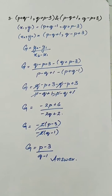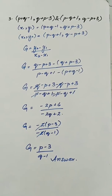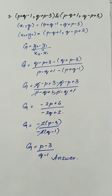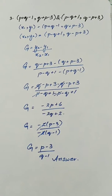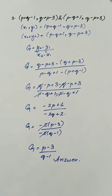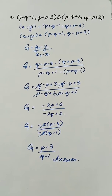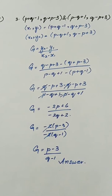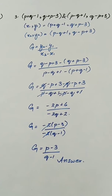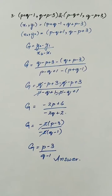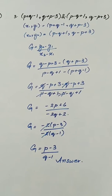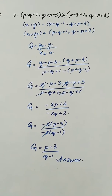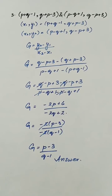Further solving, we will have q - p + 3 - q - p + 3 in the numerator, and p - q + 1 - p - q + 1 in the denominator, giving us -2p + 6 over -2q + 2. Taking -2 as common both in the numerator and denominator, we remain with (p - 3) over (q - 1), and the -2 cancels out. So the final answer is (p - 3) / (q - 1), which is the gradient of the given coordinates.